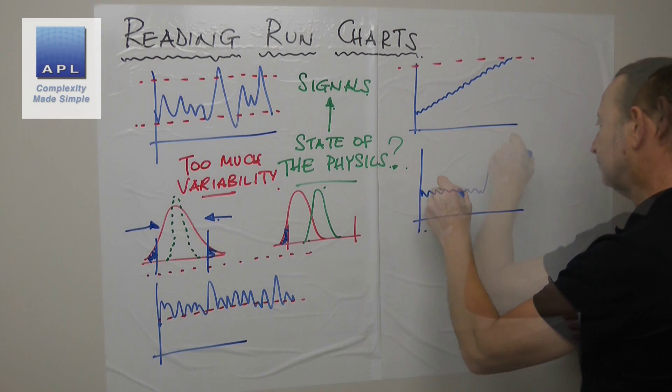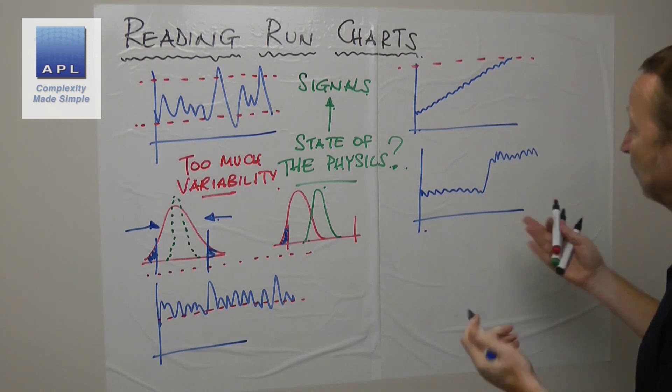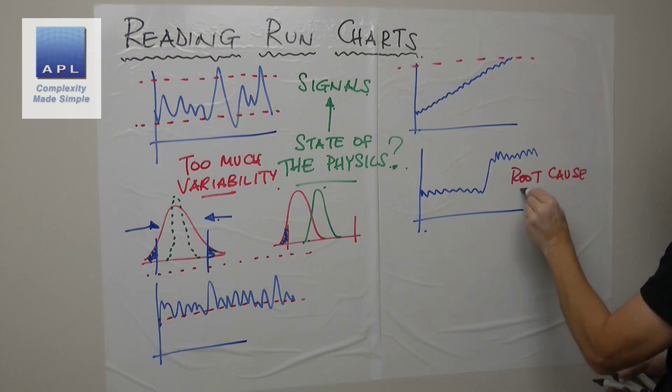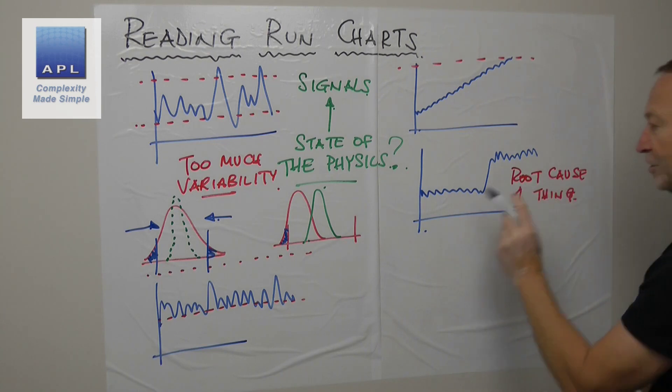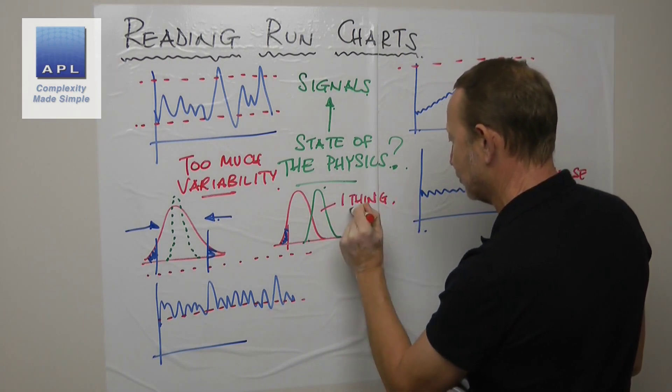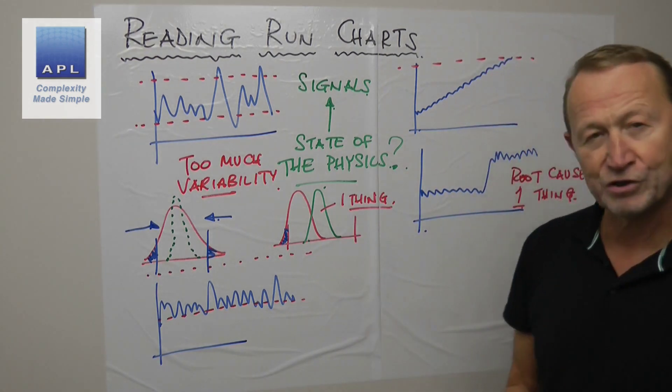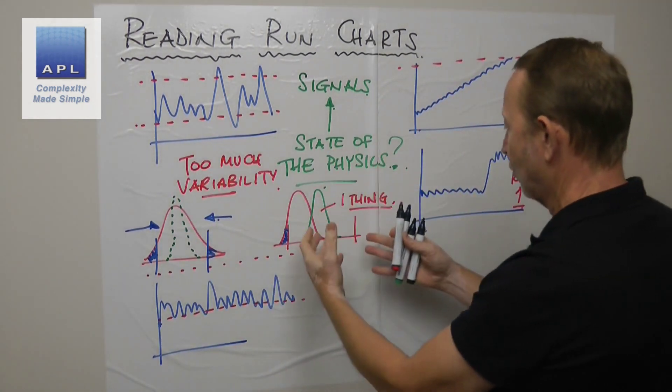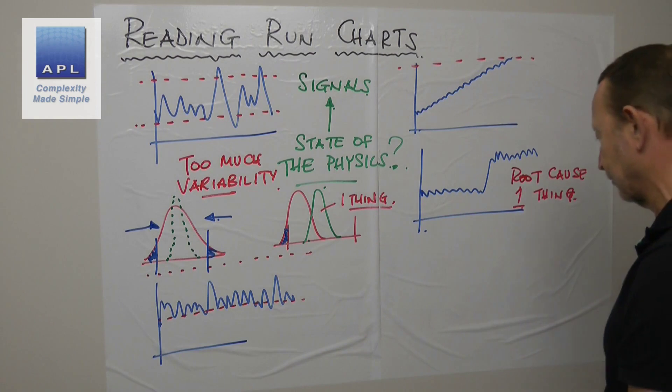You might see this. Now it would be unusual necessarily to see this, but again what's the physics? Something changed. What it's telling me is this has a root cause. Root cause means there's one thing that did that, something's changed. Same with this - usually one thing can transform the center, the average result.